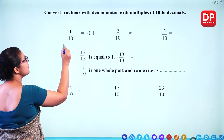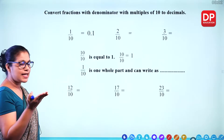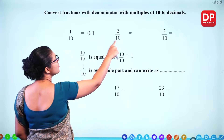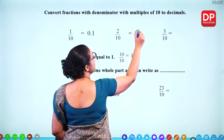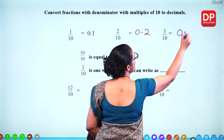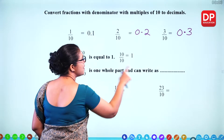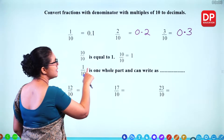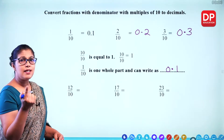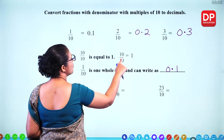Now look at the denominator — the denominator is 10. This is 1 part of 10, so we can write this as 0.1. Two parts of 10 is 0.2. Three parts of 10 is 0.3. So 1 over 10 can be written as 0.1. Ten parts like that — 10 over 10 is equal to 1.